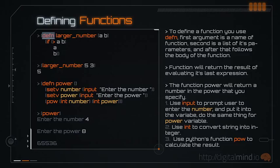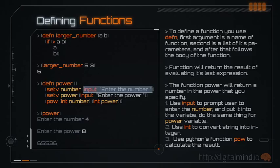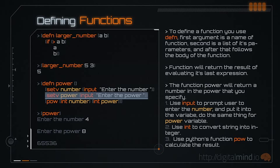To loop through a list, you can use for, which has a similar structure to for-in in Python. To define a function in Hi, you use defn. First you specify the name of the function, then you list its arguments, and then follows its body. The function will return the result of evaluating its last expression. For example, here we create a function that raises a number to the power you specify, using input to prompt the user, assigning the inputs to variables, and finally converting them to integers and passing them to the pow function.